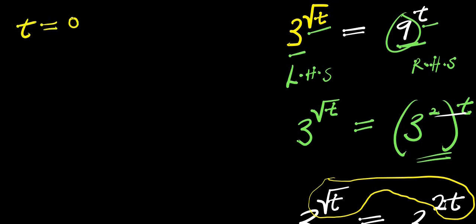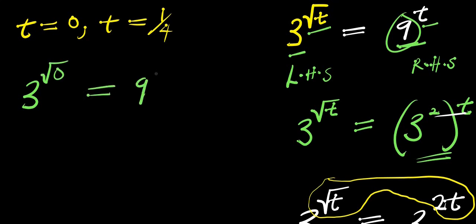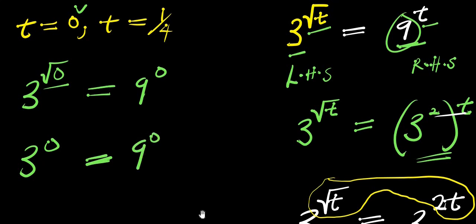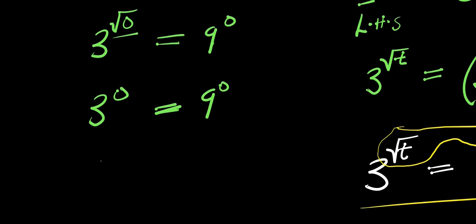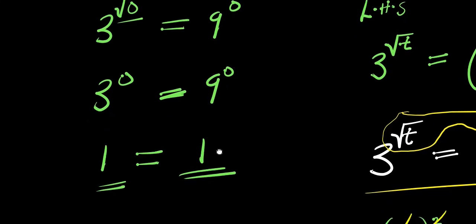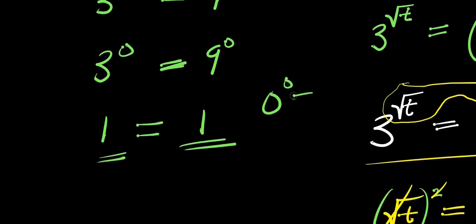We have t equals 0 and t equals 1 over 4. Checking t equals 0: we substitute to get 3 to the power of square root of 0 equals 9 to the power of 0. Square root of 0 is 0, so we have 3 to the power of 0 equals 9 to the power of 0, which gives 1 equals 1. You should know that any number, except 0, raised to the power of 0 is 1 — 0 to the power of 0 is not 1.